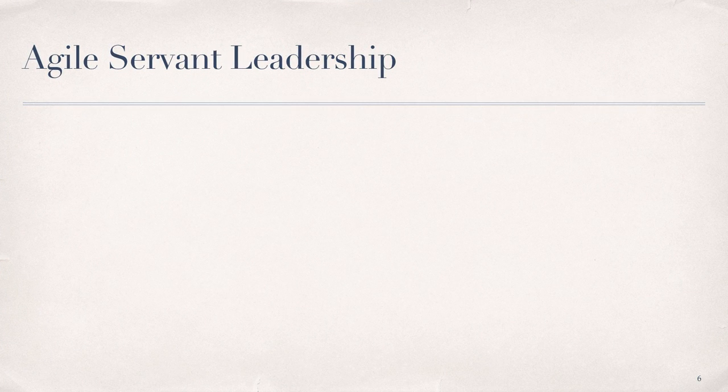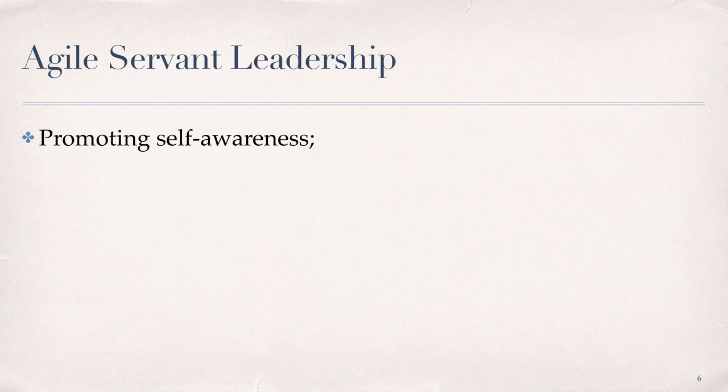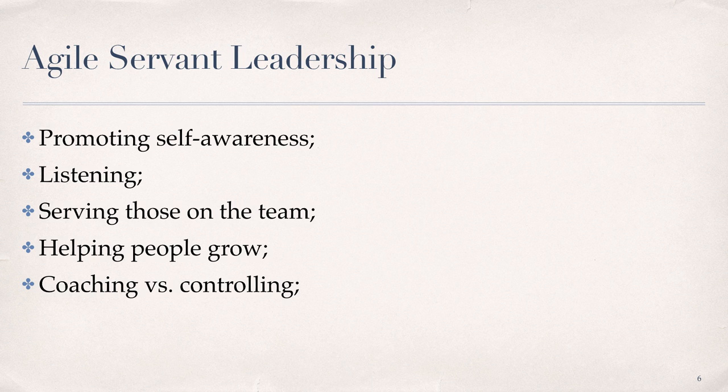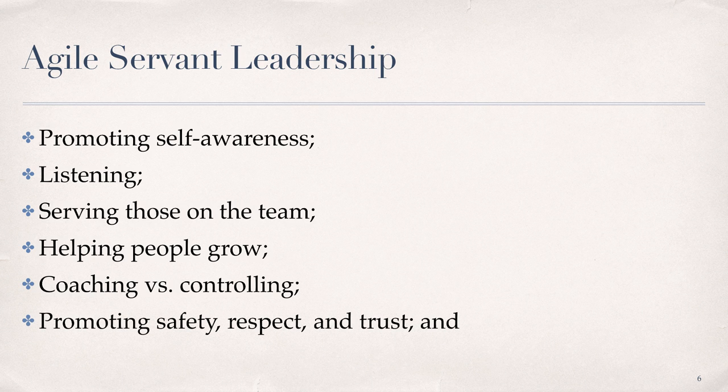Working with people is at the core of the Agile environment, expressed as servant leadership. According to the Agile practice guide, Agile approaches emphasize servant leadership as a way to empower teams. Servant leadership is the practice of leading through service to the team by focusing on understanding and addressing the needs and development of team members in order to enable the highest possible team performance. Characteristics of servant leadership include: promoting self-awareness, listening, serving those on the team, coaching versus controlling, promoting safety, respect and trust, and promoting the energy and intelligence of others.